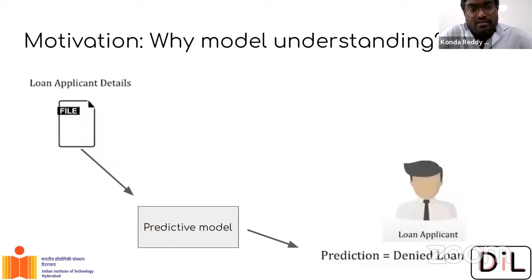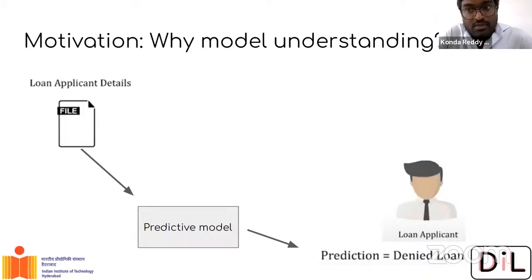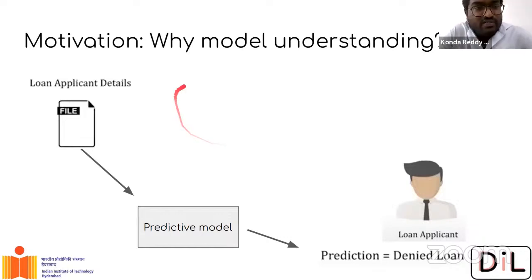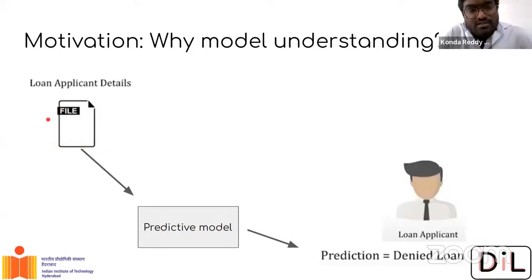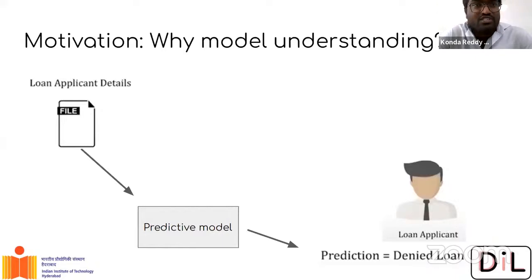This is one way to find out if the model is biased towards certain genders or races in the population. That is another important use case for studying model understanding. Let's take another example: sanctioning or denying a loan. This is also a binary classification. Information like annual salary, EMI already being paid, previous loans and their repayment history all go in as input to the classifier. The prediction in this case is denying the loan.